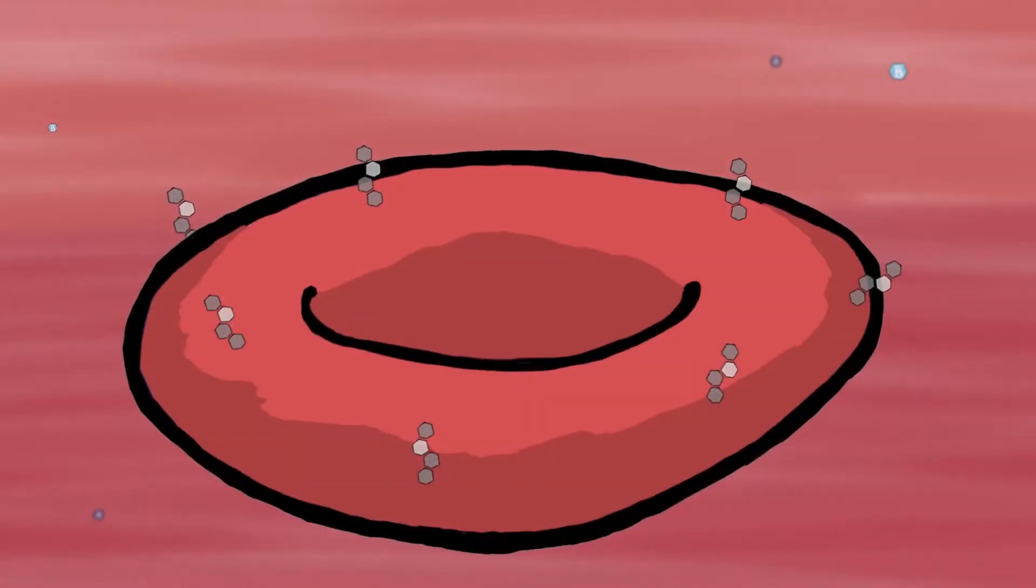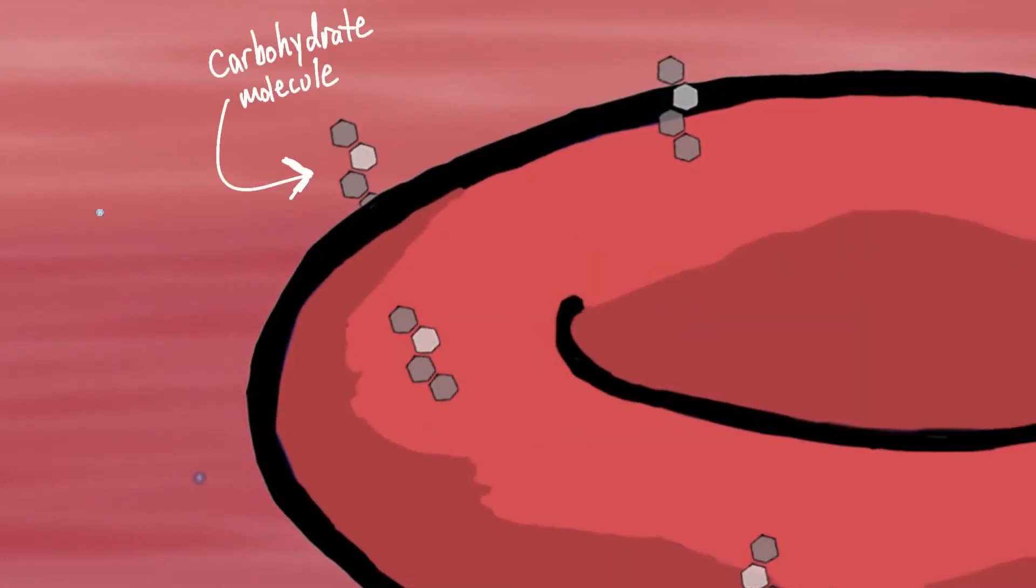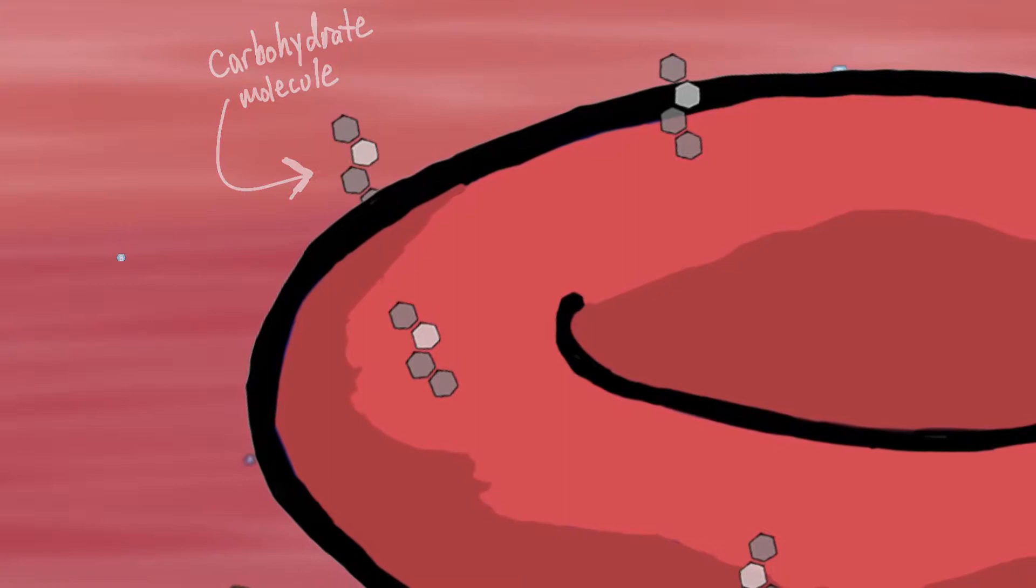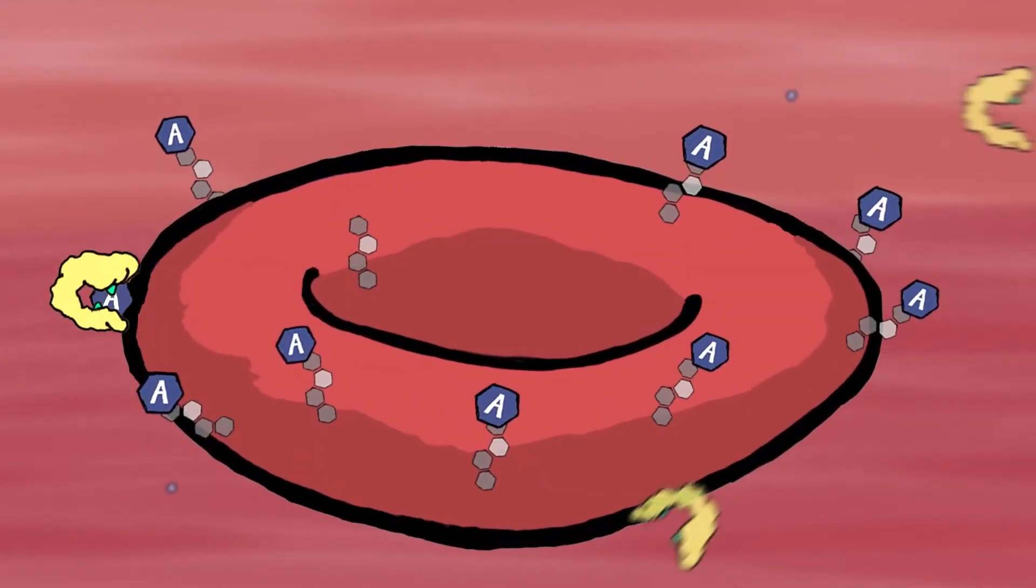But on the surface of red blood cells, like most cells in your body, they're covered with different molecules that determine the blood cell's type, as we call it. This carbohydrate may or may not be modified to have three different types.